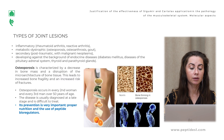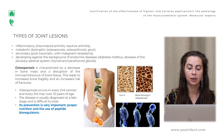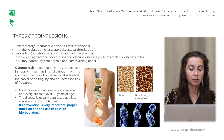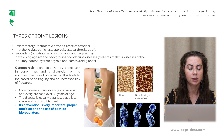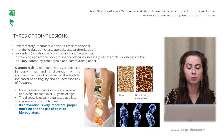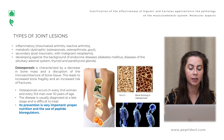We can see four types of joint lesions. The first is inflammatory — for example, rheumatoid arthritis and reactive arthritis. The second is metabolic dystrophic diseases such as osteoporosis and osteoarthritis. The third is secondary joint diseases. The fourth is post-traumatic, which includes malignant neoplasms and conditions developing against the background of endocrine diseases.